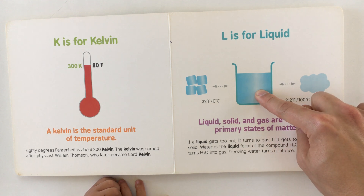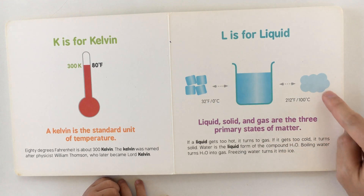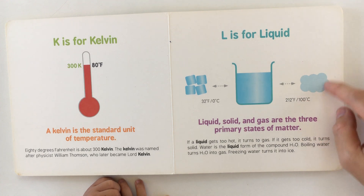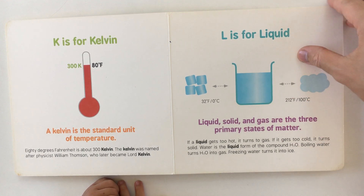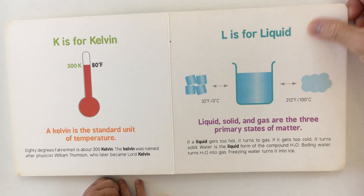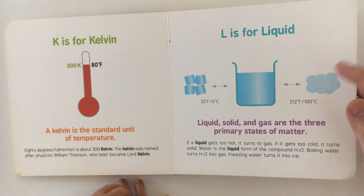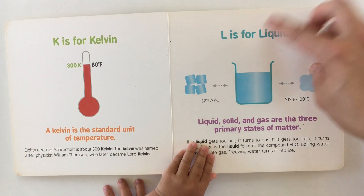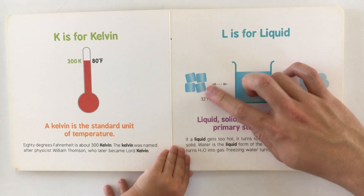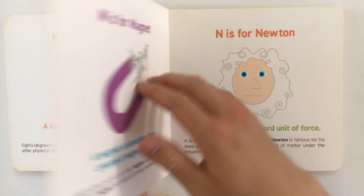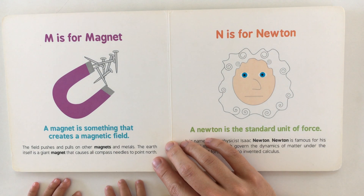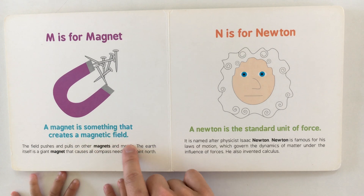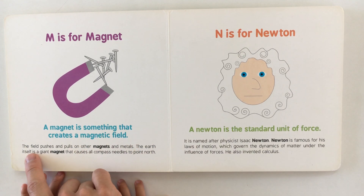Here it's a liquid, then here it becomes a gas — that's when you boil water, it becomes steam. That's very hot, you don't want to touch water when it's very hot. And remember when you bump your head, we give you ice!